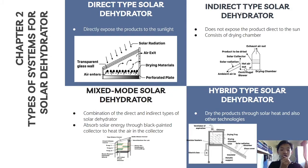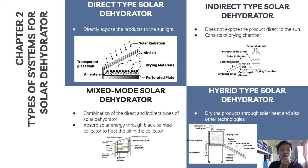Now I would like to explain the four types of systems for solar dehydrators. First is the direct type. As its name implies, this type of dehydrator exposes products directly to the sun. During drying, the product is placed on a black surface that acts as a heat absorber inside a transparent, closed container, and can be dried by absorbing solar heat, heated air, or both. Next is the indirect type, which consists of a drying chamber that shields the product from direct sunlight. A solar collector installed at the side heats the air and passes it into the drying chamber to remove moisture, which exits through a chimney above.